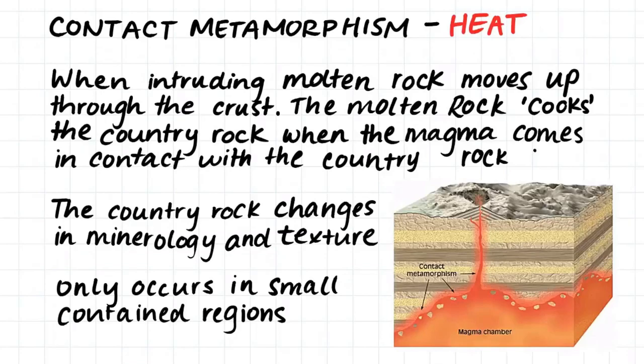Metamorphism occurs due to either heat, pressure, or a combination of the two. Contact metamorphism occurs purely because of heat. It occurs when intruding molten rock moves up through the crust, cooking the country rock — the surrounding rock — when the magma comes in contact with it. The country rock will change in mineralogy and texture, but this will only occur in small contained regions where the molten rock makes contact.